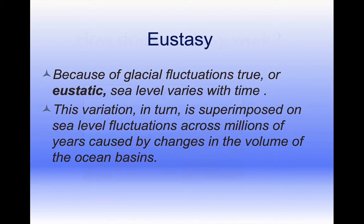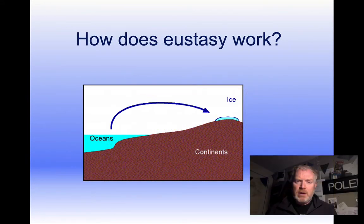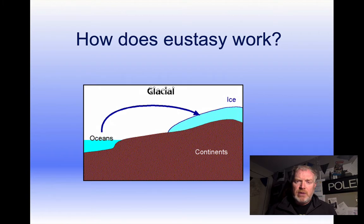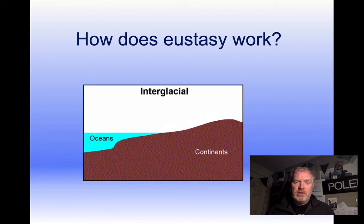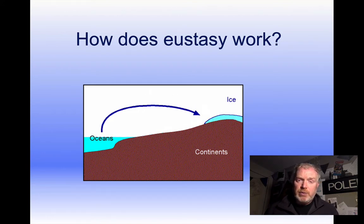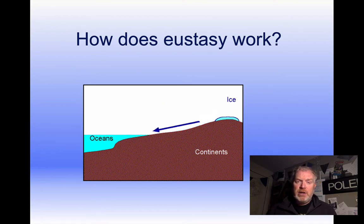The more water that's on the continent, as we can see from this animation, the lower the sea level goes. The less water stored in ice on the continent, the higher the sea level is. So during an interglacial period like we have now, sea level is relatively high, while during a glacial period sea level will be relatively low.